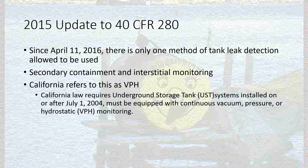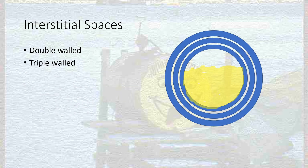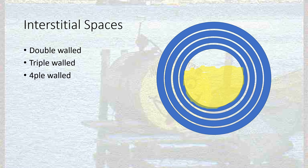Californians had this on their books since 2004 and they refer to it as VPH, which stands for continuous vacuum, pressure, or hydrostatic monitoring. When you talk about interstitial spaces, what we're talking about is the space between two tanks. For a double-walled tank that's the primary tank and then the secondary tank. You can have triple-walled systems, quadruple-walled systems — pretty much any amount of walls that you can manufacture.